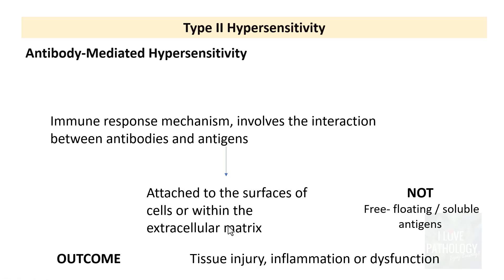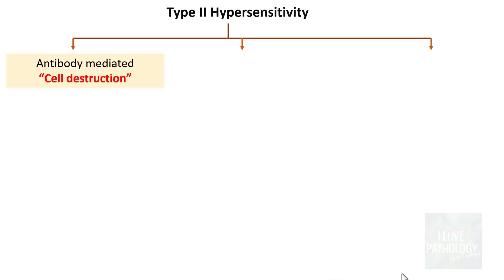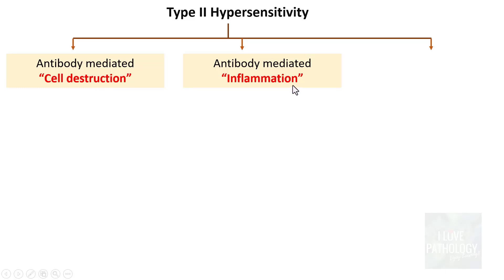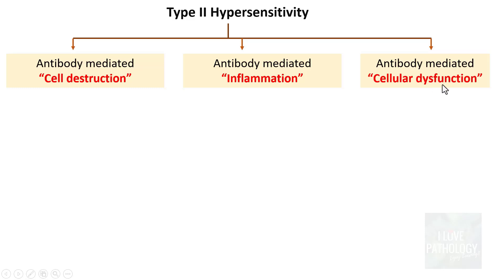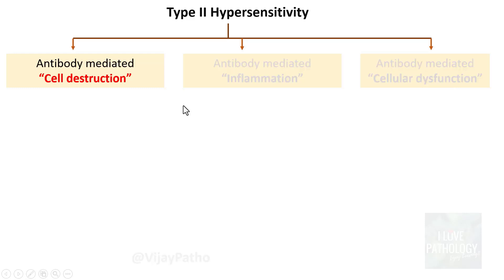The outcome of type 2 hypersensitivity is tissue injury, inflammation, or dysfunction. There are 3 different outcomes: one is antibody mediated cell destruction, the second is antibody mediated inflammation, and the third is antibody mediated cellular dysfunction. Let us understand these one by one in detail.